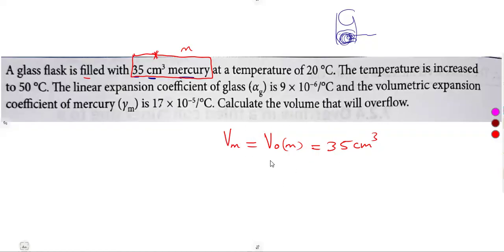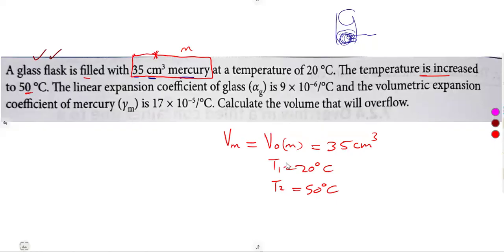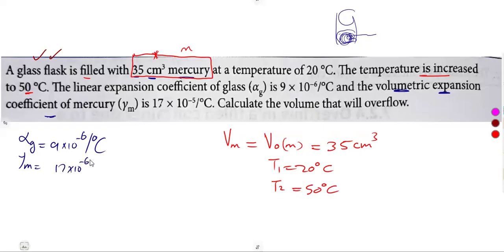The mercury is at an initial temperature of 20 degrees Celsius. The temperature is increased to a final temperature of 50 degrees Celsius. The linear expansion coefficient of the glass flask — using G for glass — is 9 times 10 to the exponent of negative 6. For mercury, we are given the volumetric expansion coefficient. The question asks us to calculate the volume that will overflow, meaning there is an overflow in this case.